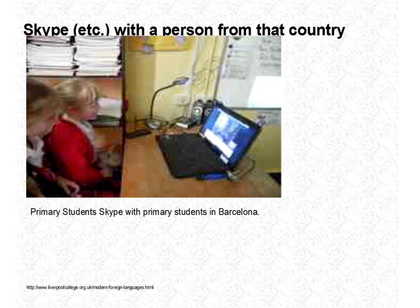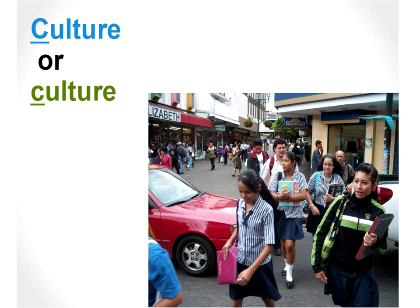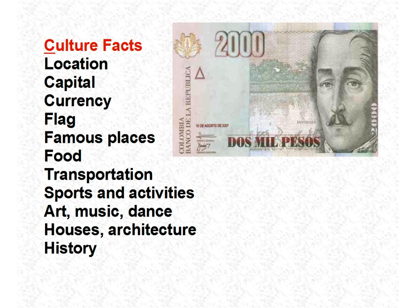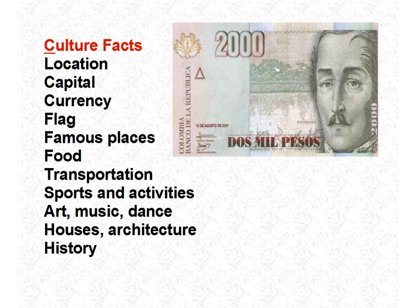I've actually had students Skype and then record the Skype call. The other way is to simply Skype with somebody from another country and bring that person into your classroom to learn about that culture. In world language education there's culture with a capital C or small c culture. Capital C culture is the facts about the culture. Small c culture is daily life culture. Capital C gives us details: location, capital, currency, flag, famous places, food, transportation, sports, art, music, dance, houses, architecture, history. But what it doesn't do is help us to learn about the people of the country. The problem with teaching what's the capital, where's it located, what's the currency — it never gets us to the people level.